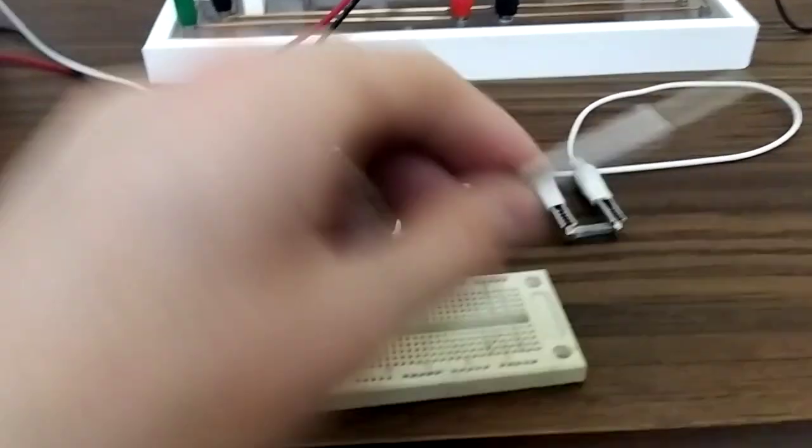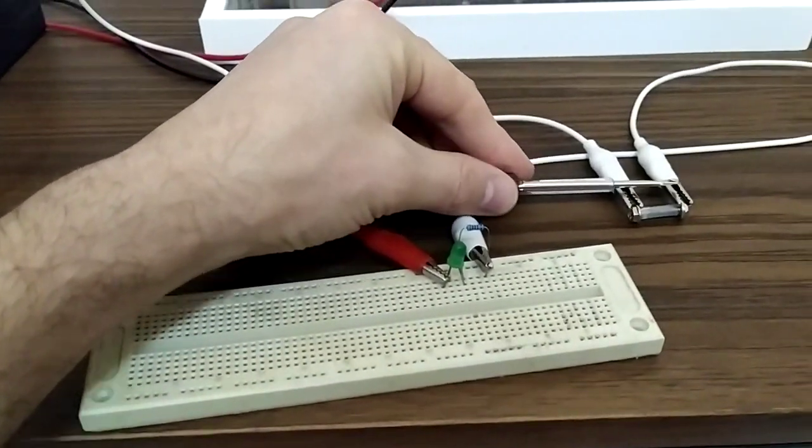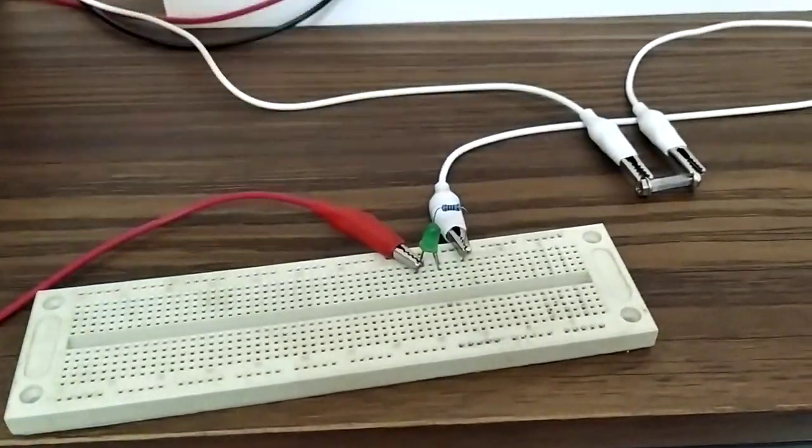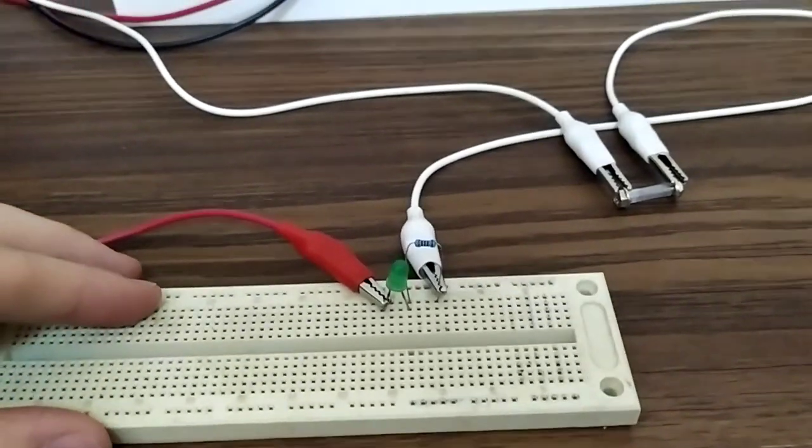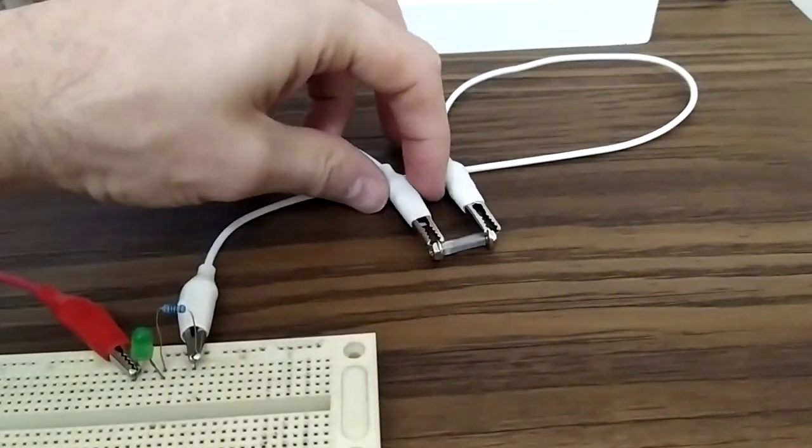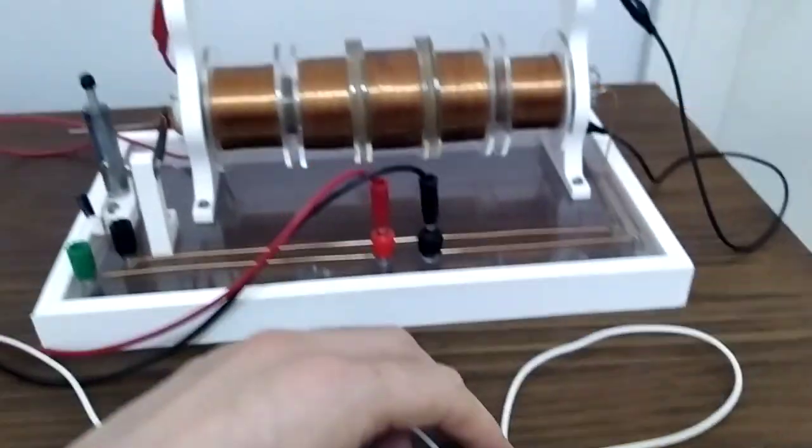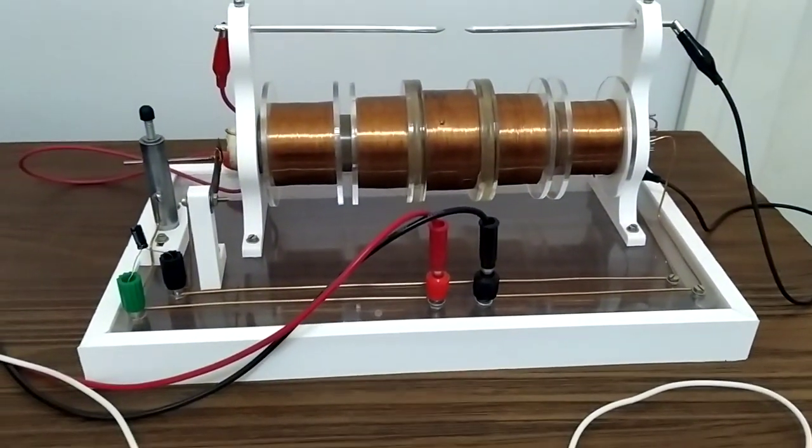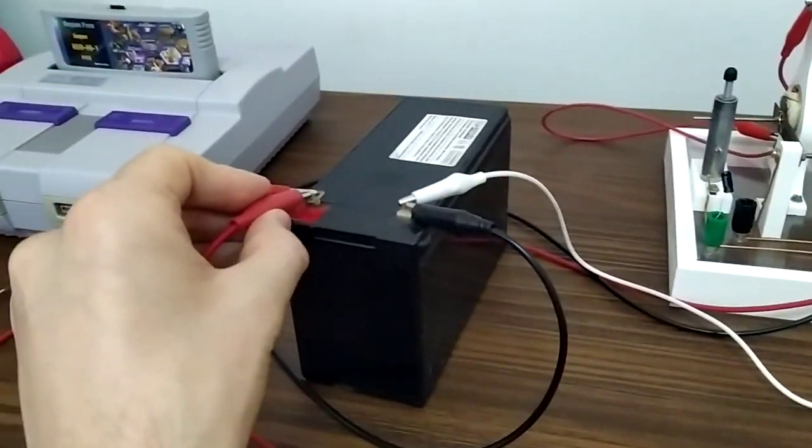Once we have contact here at the coherer, our LED turns on. The way the coherer works is it is sensitive to electromagnetism and as you can see we will turn it on.